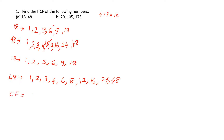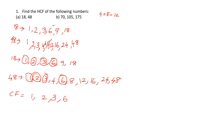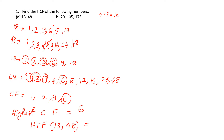The common factors are: 1 is in both, so 1 is a common factor. 2 is in both, so 2 is a common factor. 3 is also a common factor. 6 is also in both, so 6 is a common factor. 9 is not in 48's list, and 18 is also not there. So the common factors are 1, 2, 3, and 6. The highest common factor is 6. Therefore, HCF of 18 and 48 is equal to 6.